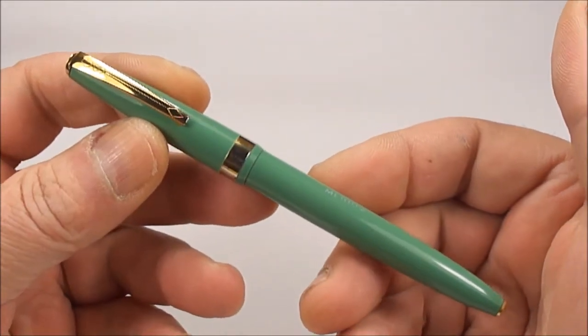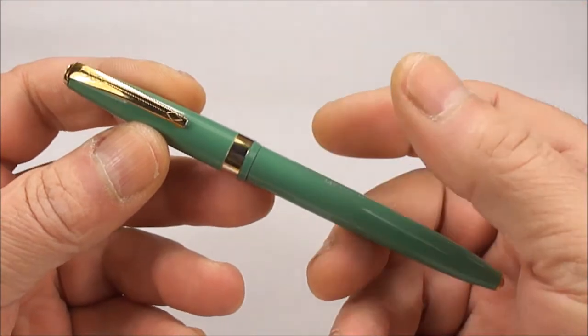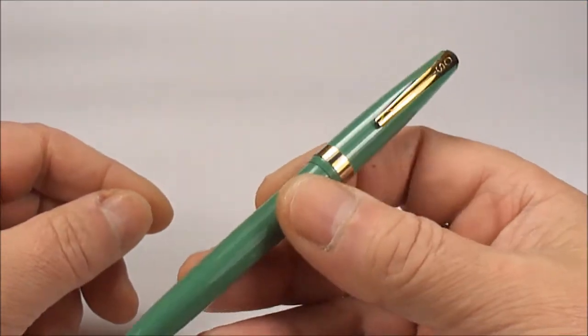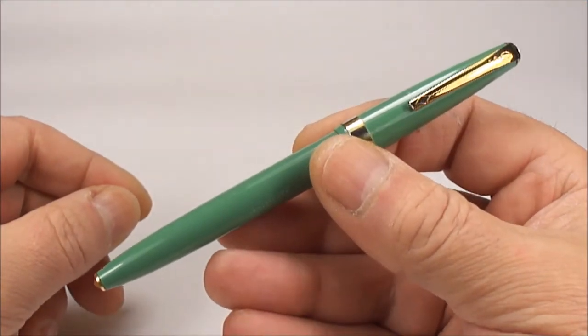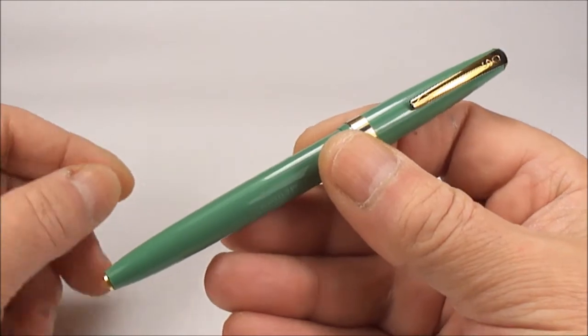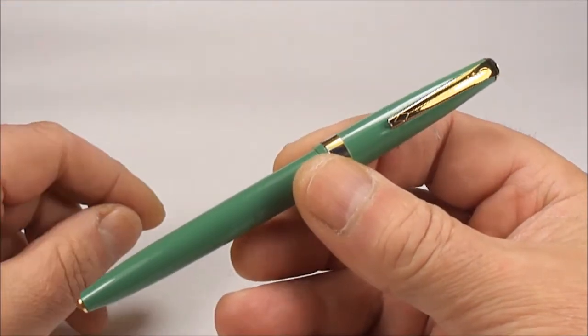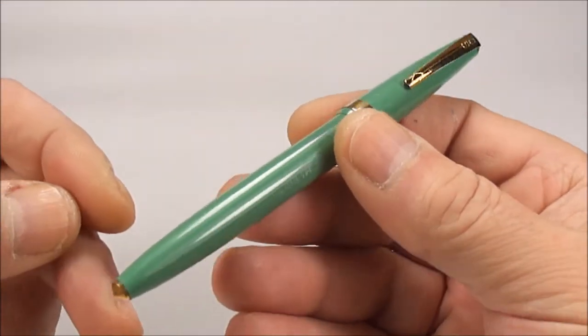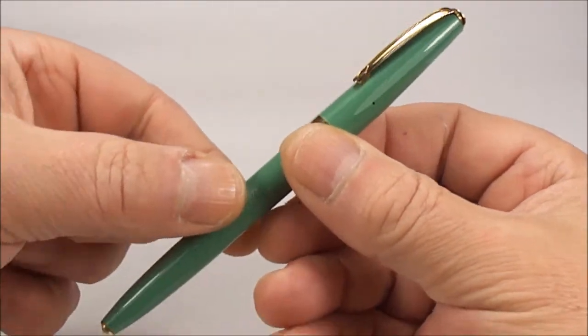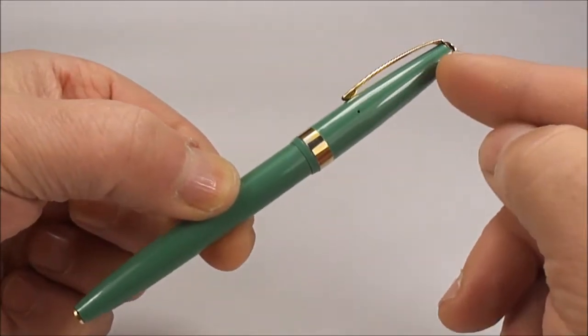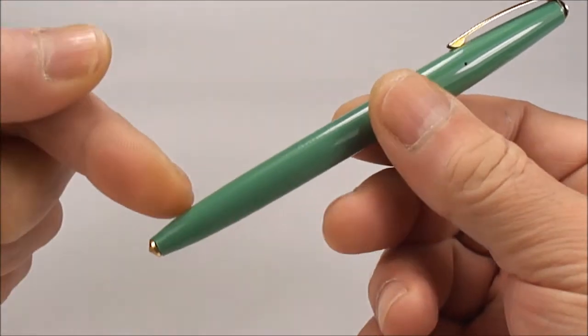So what we've got here is the duck egg green. Now this particular model they termed as the press-sac or pre-sac, and we'll show you why in a moment. But as you can see, the pen itself has a sort of taper to the top of the cap, and that matches the end of the barrel there.